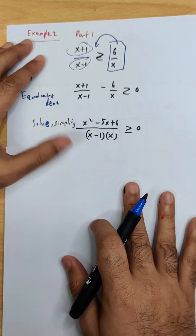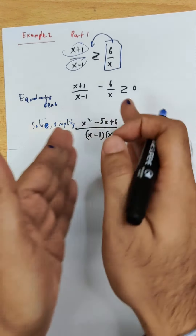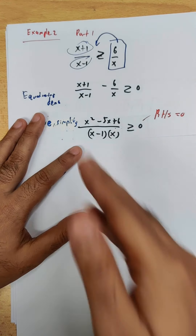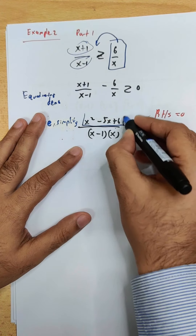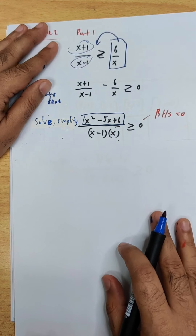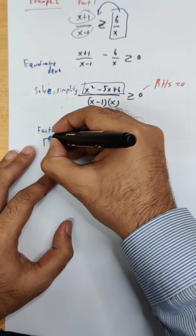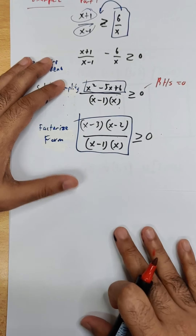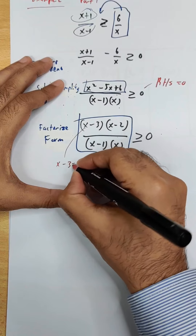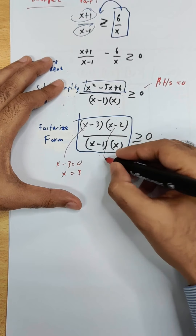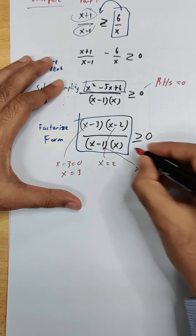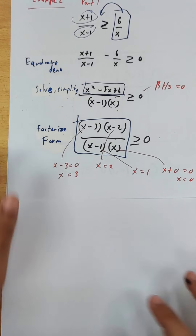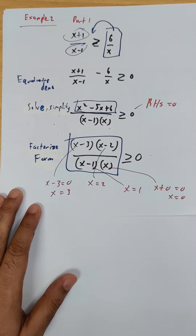After solving and simplifying, the left side is not yet in factorized form, so factorize it until you get the factorized form. Then from the factors: x minus 3 equals zero gives x equals 3; the others quickly give x equals 2, x equals 1, and x plus 0 equals zero gives x equals 0.